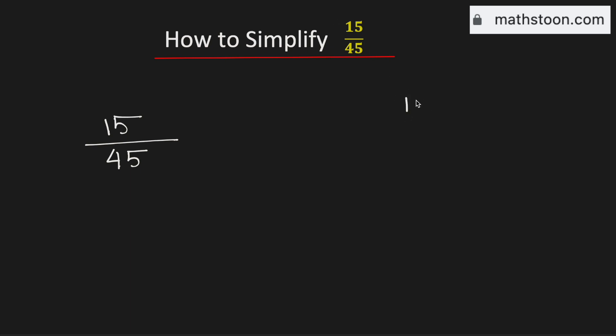We know that 15 can be written as 1 times 15 and 3 times 5, whereas 45 can be written as 1 times 45, 3 times 15, and 5 times 9.